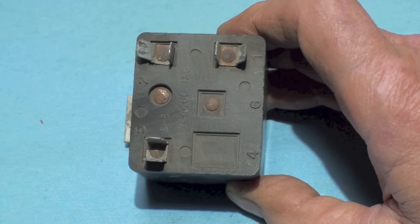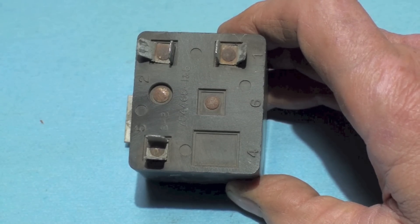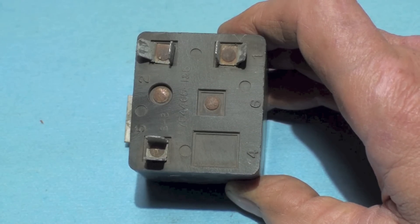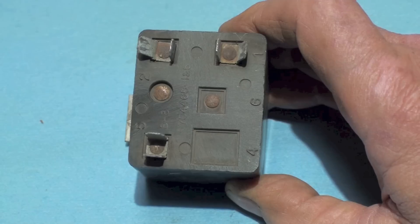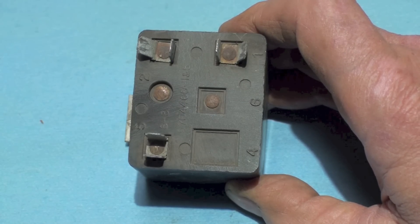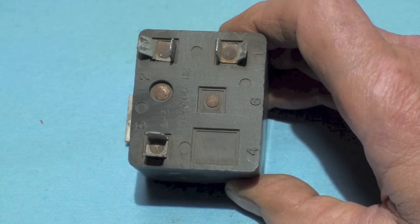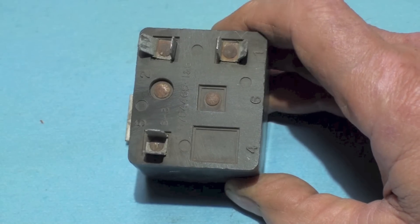Now these are usually used on PSC motors, permanent split capacitors. It's actually going to be a capacitor start capacitor run motor, so it's got a large capacitor placed in the start circuit through this relay to energize the start winding.